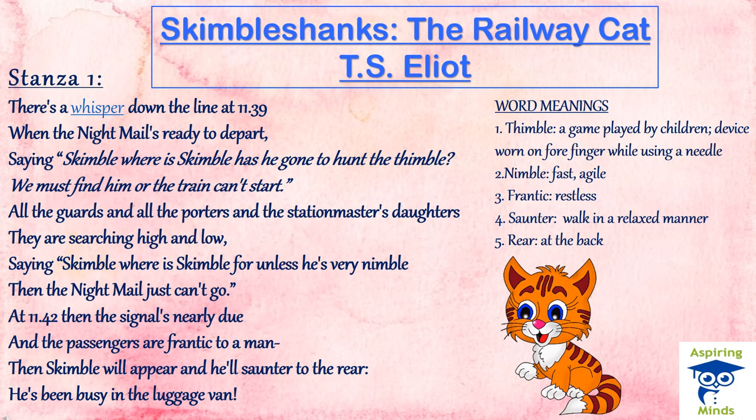Now let us begin our reading of the poem Skimble Shanks. It is divided into 5 stanzas and without much ado let us begin our reading of stanza 1. Please note the important time at which the poem begins — it is 11:39 at night when the train is about to depart. Skimble Shanks is a ginger tabby cat who works on a train as a kind of inspector or supervisor. The name of the train mentioned is the Night Mail.